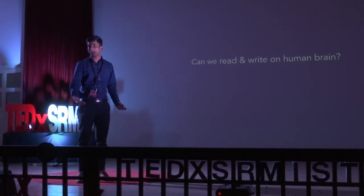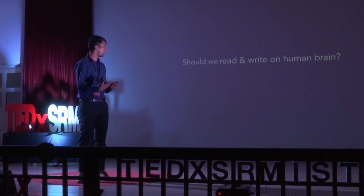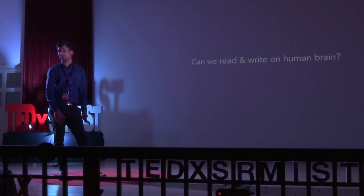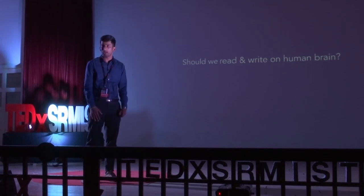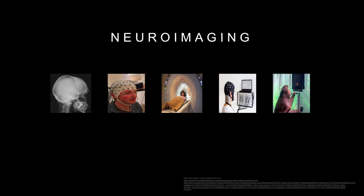The three questions I'll cover are: can we read and write on the human brain? Why should we? And if we can, what are the consequences — what future does it hold for humanity? On reading the brain, we have used neural imaging for a long time — tools that help measure and understand brain activity. These tools evolved from 1895 to right now in the 2000s, leading to different applications.